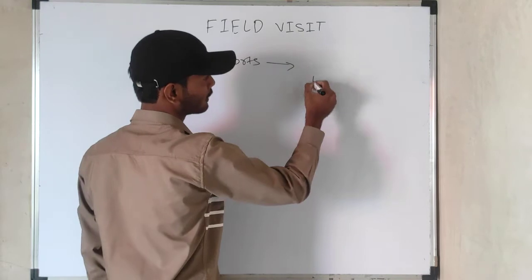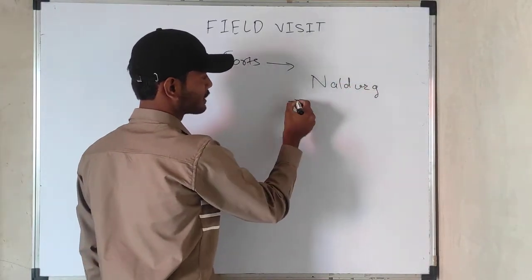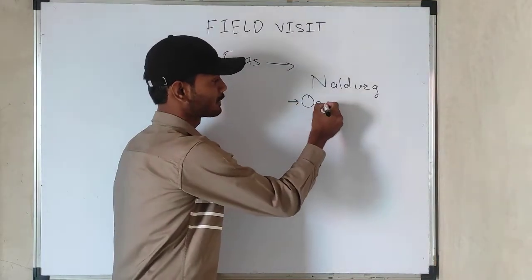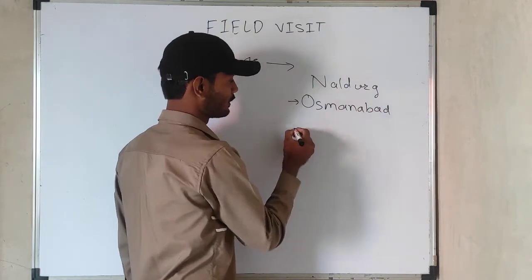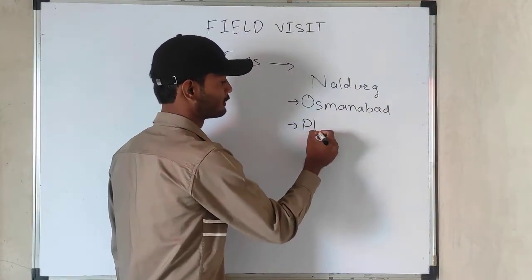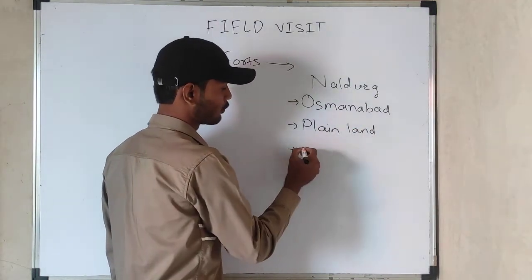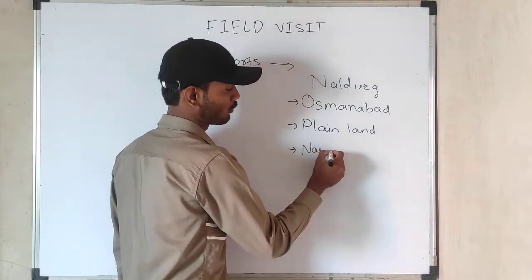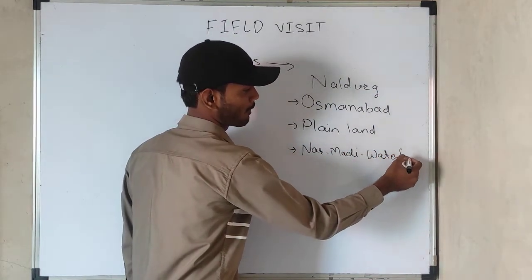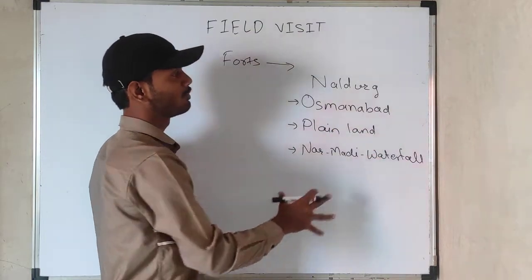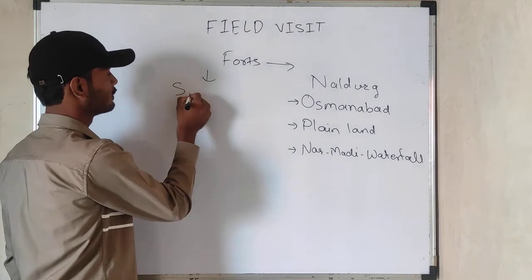The first fort we will talk about is Naldurga Fort. First point: it is located in Usmanabad district. Second point: it is located on plain land. We also know that there is a waterfall called the Nirmadi waterfall at this particular fort. These are all the important points regarding Naldurga Fort.